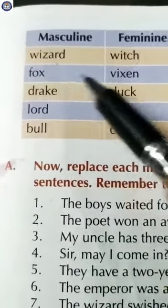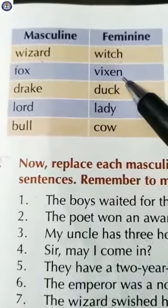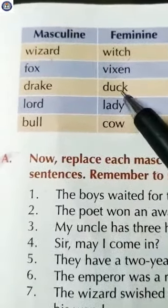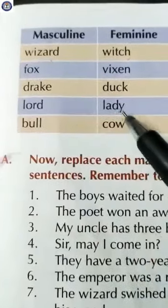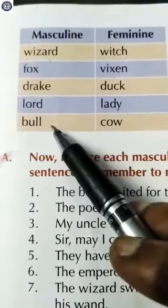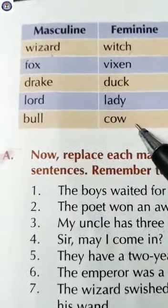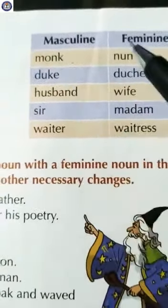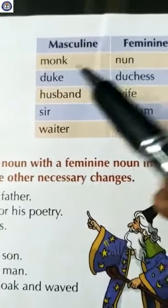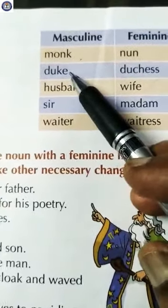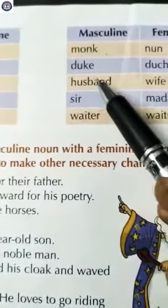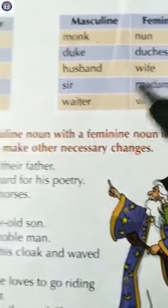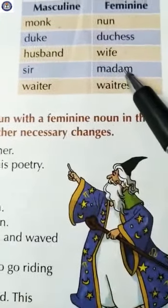Masculine: fox, and feminine: vixen. Masculine: drake, and feminine: duck. Masculine: lord, and feminine: lady. Masculine: bull, and feminine: cow. Masculine: monk, and feminine: nun. Masculine: duke, and feminine: duchess. Masculine: husband, and feminine: wife. Masculine: son, and feminine: daughter. Masculine: waiter, and feminine: waitress.